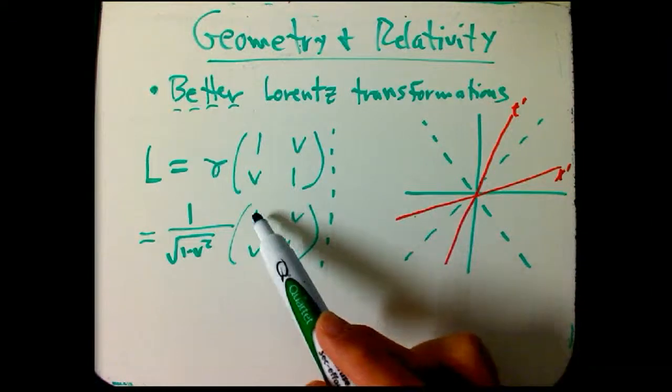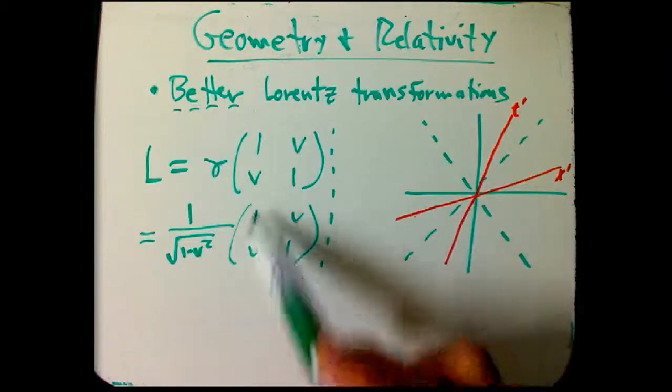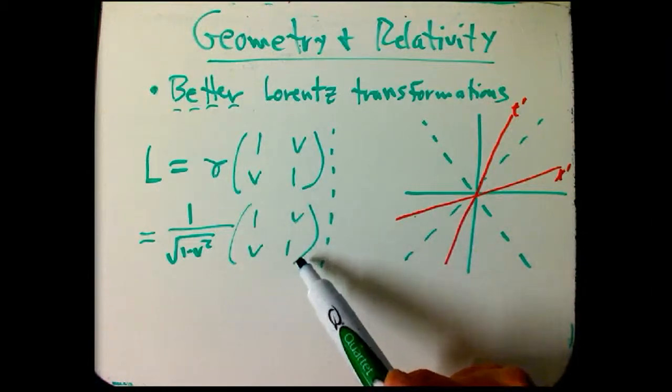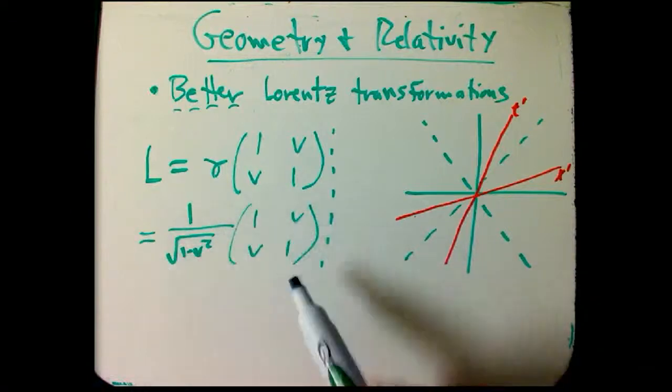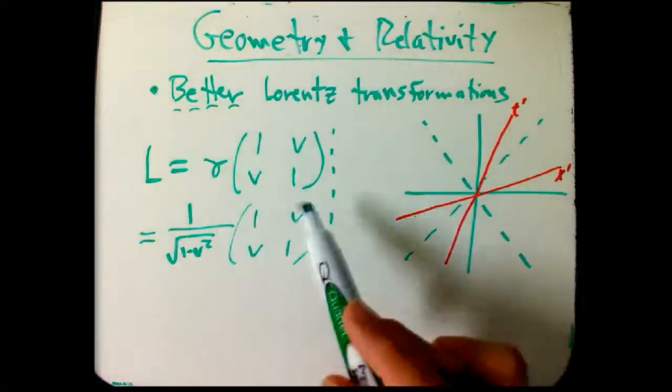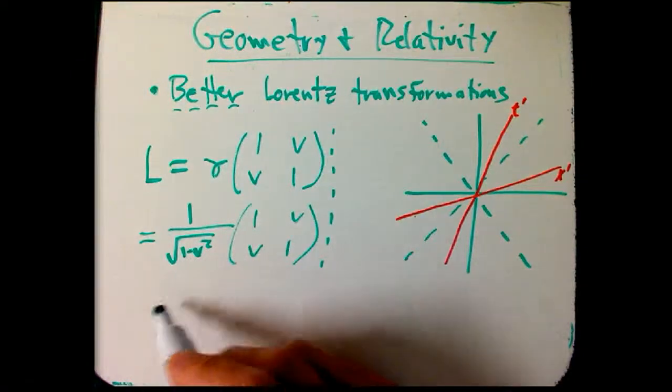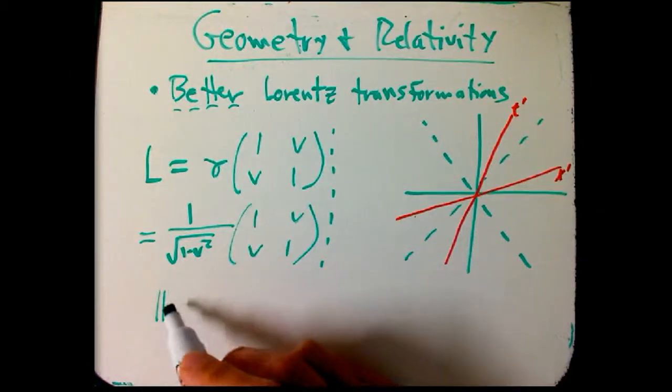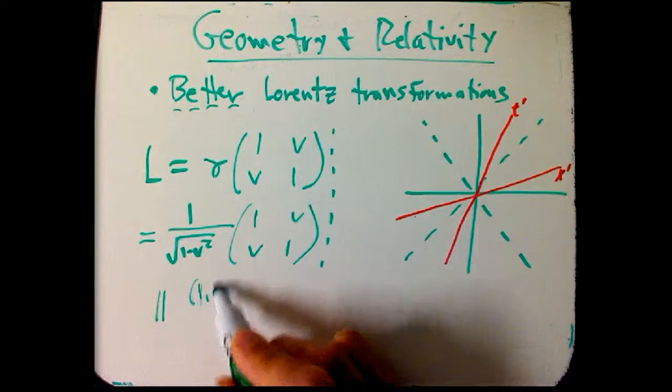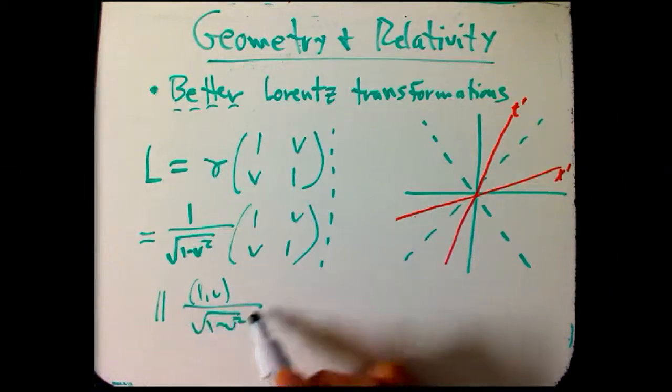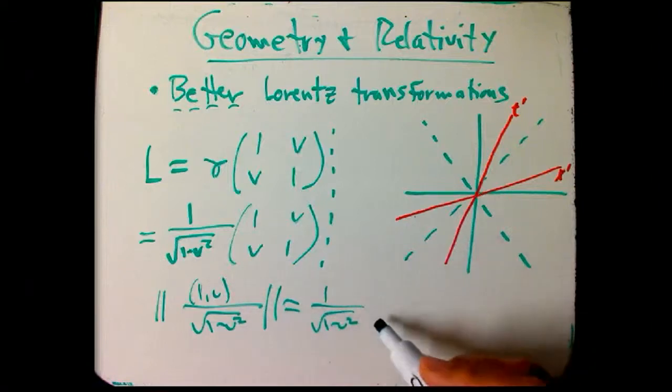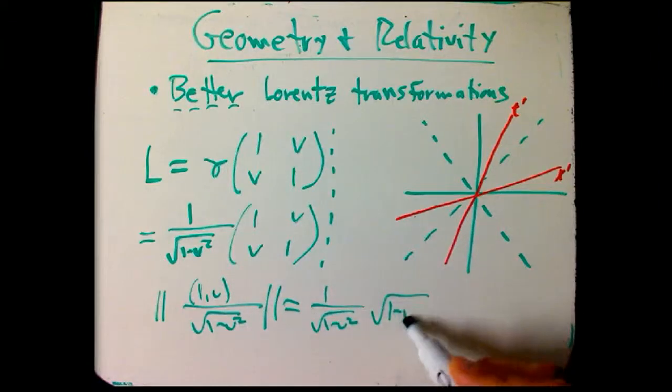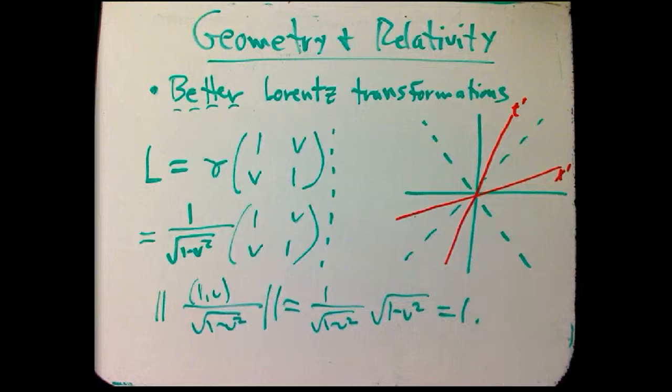Clearly, if you take the dot product of 1v and v1, that's 0. And let's look at the assertion that it's a unit vector. The magnitude of 1v over root 1 minus v squared - well, 1 over root 1 minus v squared comes out, and it's just the magnitude of 1v. That's where that gamma vector came from in the first place. It's the square root of 1 minus v squared equals 1. So these guys are unit vectors.